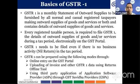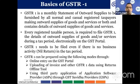GSTR1 is a monthly statement of output supplies furnished by normal and casual registered taxpayers making outward supplies of goods and services or both, containing details of those outward supplies. Every registered taxable person is required to file GSTR1 electronically on the GST portal. The tax period is one month. If you have no business in a particular month, you are still required to file a nil return for that tax period.